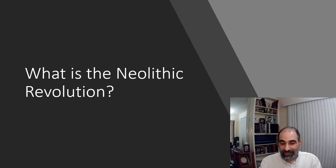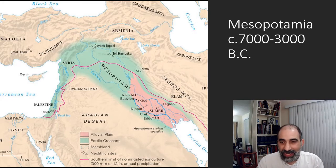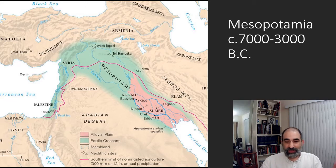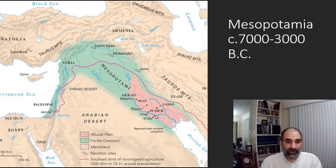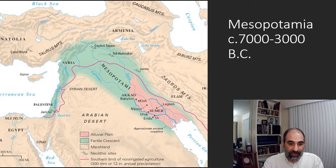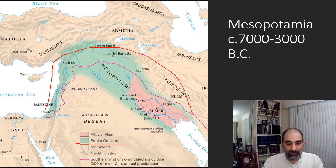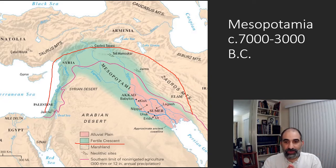Let's start with our first slide here, and a place called Mesopotamia. Mesopotamia is actually Greek words — 'meso' meaning middle, like Mesoamerica, and 'potamia' from the Greek word 'potamos' meaning rivers. So Mesopotamia means the land between the rivers — between the Tigris and Euphrates rivers — and really throughout the entire Fertile Crescent that we see on our map here. That whole region is where the Neolithic Revolution begins, somewhere between about 7000 and 3000 BC.